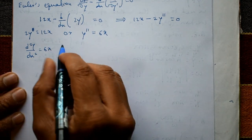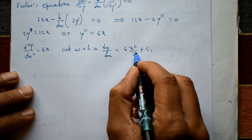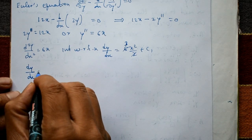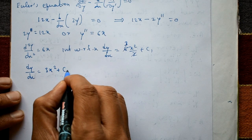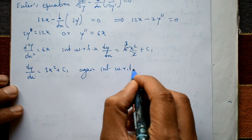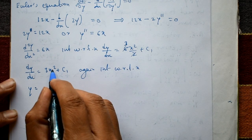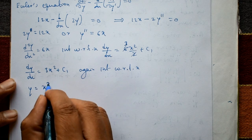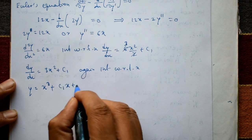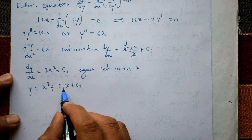Since y'' = d²y/dx² = 6x, integrate with respect to x. First integration gives dy/dx = 3x² + c₁. Integrating again with respect to x gives y = x³ + c₁x + c₂.